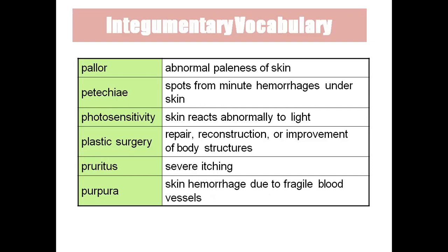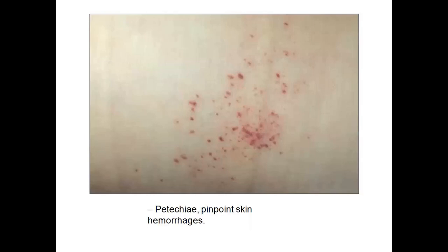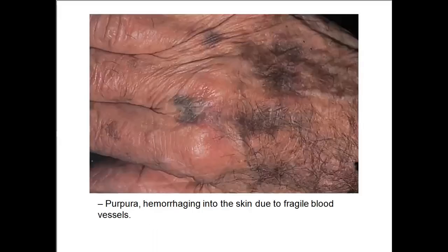Purpura is skin hemorrhage due to weak blood vessels. Petechia is also called pinpoint skin hemorrhages. Purulent infection produces pus from dead bacteria, white blood cells, and tissue debris. Strawberry hemangioma is a congenital collection of dilated blood vessels that will be like a birthmark, usually seen in children and present permanently.